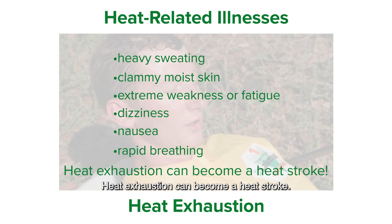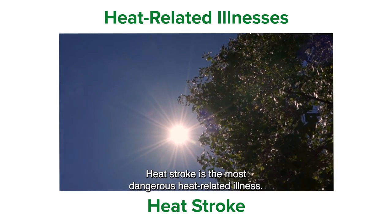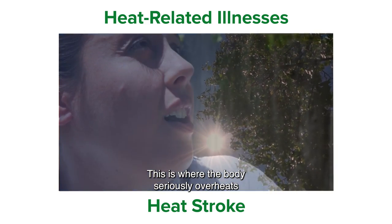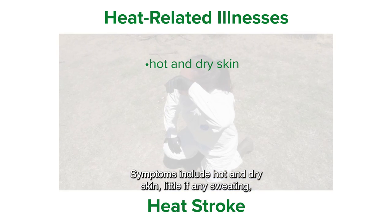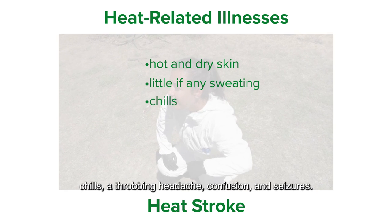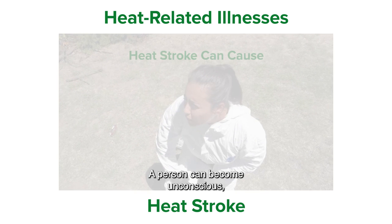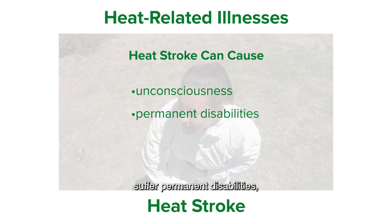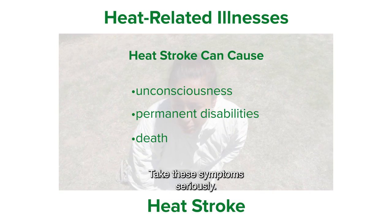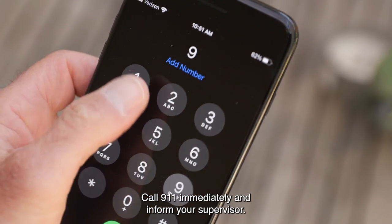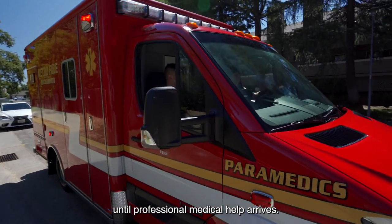Heat stroke is the most dangerous heat-related illness, where the body seriously overheats and cannot cool itself down. Symptoms include hot and dry skin, little if any sweating, chills, a throbbing headache, confusion, and seizures. A person can become unconscious, suffer permanent disabilities, or die very quickly from heat stroke. Take these symptoms seriously — call 911 immediately and inform your supervisor. Stay with the person until professional medical help arrives.